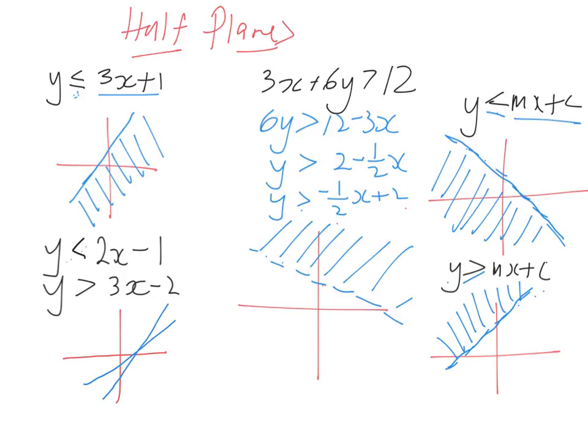3x minus 2 would look like that. So what we're doing is we're drawing an intersection between y being less than 2x minus 1, which is this one. Whatever is less than that but whatever is greater than 3x minus 2. So we've got our 3x minus 2, we've got our 2x minus 1. So what we're doing, we're shading the area less than 2x minus 1 and greater than 3x minus 2. And we'll find that is this area here.